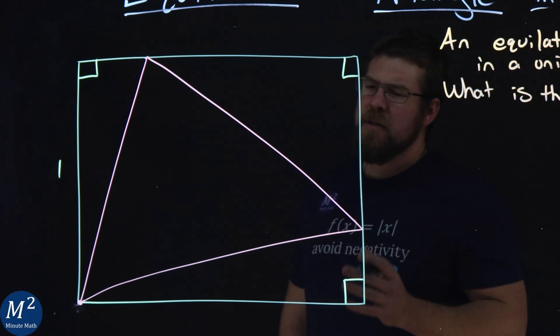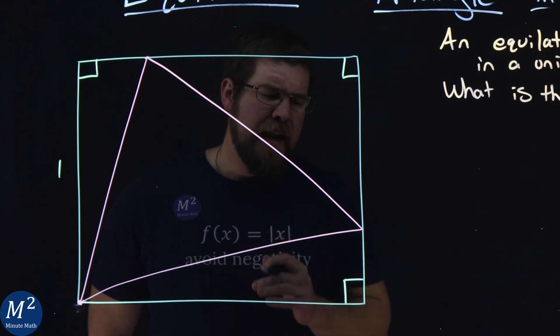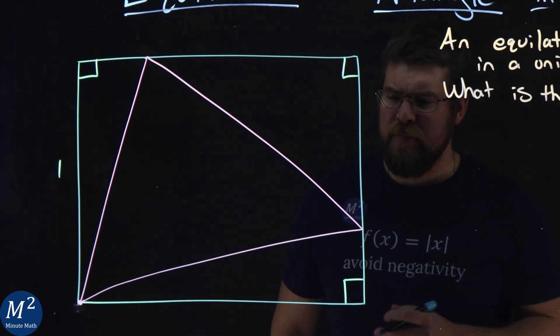So we have an image here of a square with a triangle inscribed, this equilateral triangle. Now, bear with my drawing here. I know it's not the best.